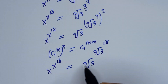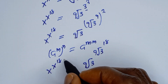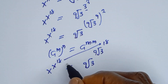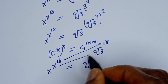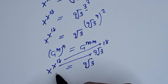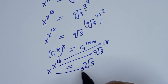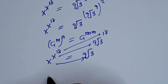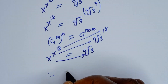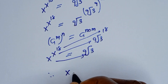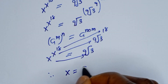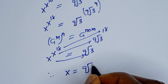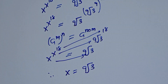Now if you compare both sides, this equals this. So x is equal to the 9th root of 3, and this x is equal to the 9th root of 3. Therefore, x is equal to the 9th root of 3.